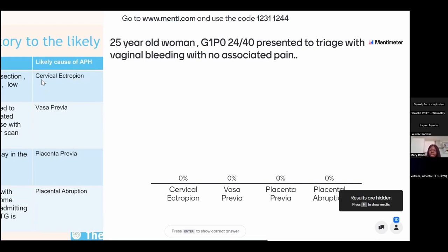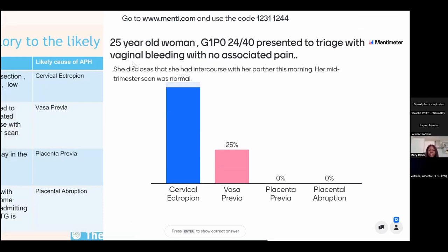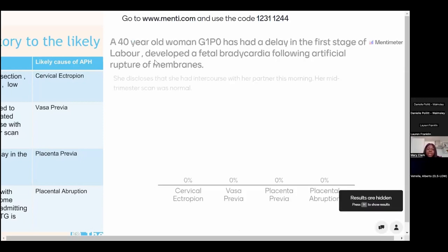The second case involves a 24-year-old presenting with vaginal bleeding and no associated pain, who had intercourse that morning, and whose mid-trimester scan was normal — confirming no low-lying placenta. The answer is cervical ectropion: the cervix is red and raw in pregnancy, so intercourse can cause bleeding. The normal scan excludes low-lying placenta and the absence of pain makes abruption unlikely.